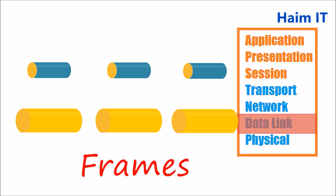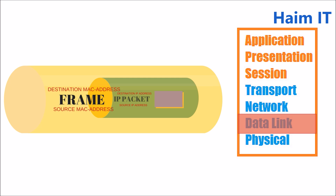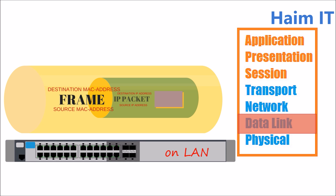After the segments are placed into the packet containers, they are handed over to the data link layer, where they are then placed into the frame containers. The frame containers have the destination and source MAC addresses that will be used for transmitting the frames on the local network.